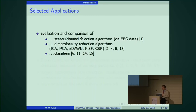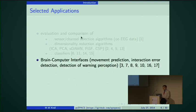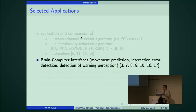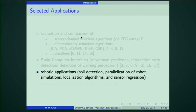The software was also used for evaluation and comparison of sensor selection algorithms, dimensionality reduction algorithms, and classifiers. We used it for brain-computer interfaces: predicting upcoming movements, detecting interaction errors — meaning if the interface is not behaving as expected there's a certain brain signal associated with that — and detecting if a person perceived a warning. There were also robotic applications: cell detection, parallelization of robot simulations, tuning localization algorithms, and sensor regression.